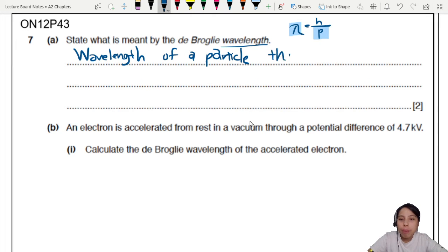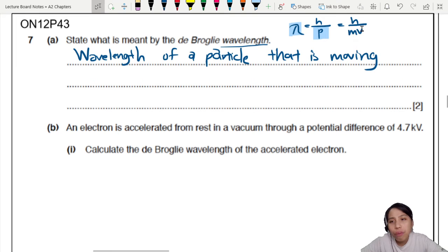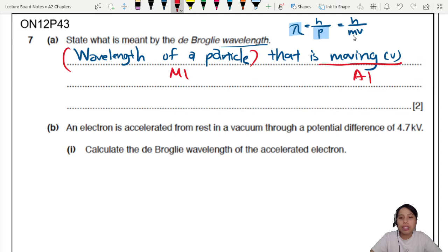The wavelength of a particle, but this particle must be moving. This is a wavelength of a particle that is moving, because this is h over mv. Momentum is mv. If your velocity is zero, then you will have h over m times zero. Some confusion, you cannot divide by zero. So it has to be moving, have to have some velocity v. Then only your equation can work. Otherwise it's just undefined. So wavelength of a particle is one mark, moving is another mark.